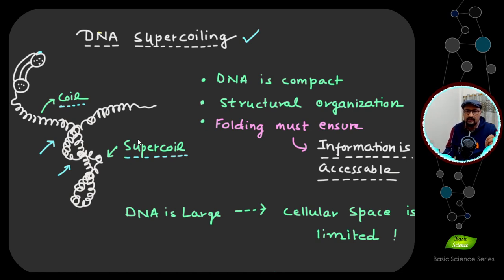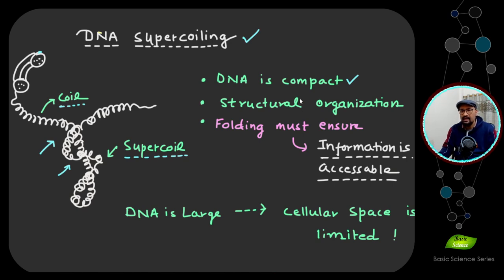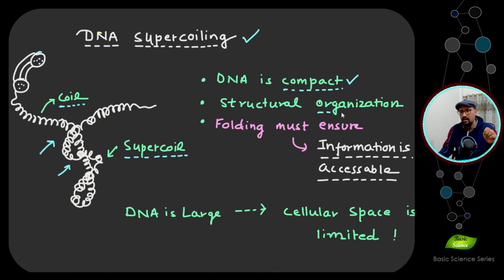Why is DNA like that? One reason is that DNA needs to be compact. It's a linear molecule, so how do you pack it? It needs to fit in the smallest space possible because cellular space is limited. That is one reason DNA exists in the cell in a compact, supercoiled state — it needs to stay within that particular three-dimensional space.